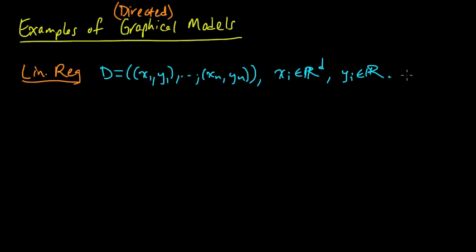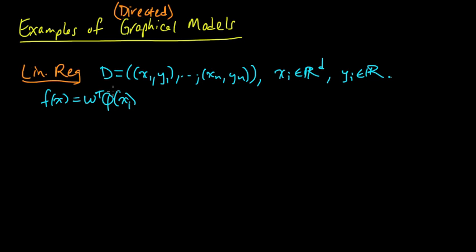Our goal is to model these data and come up with a function f(x) to predict new values. The form of the function under linear regression is w-transpose φ(x), where φ is some vector of basis functions and w is some weight vector. The linear part is linear in w, not necessarily in x — so you could have non-linearities in x through the φ basis functions.